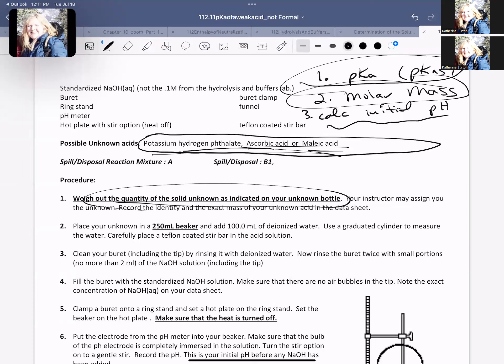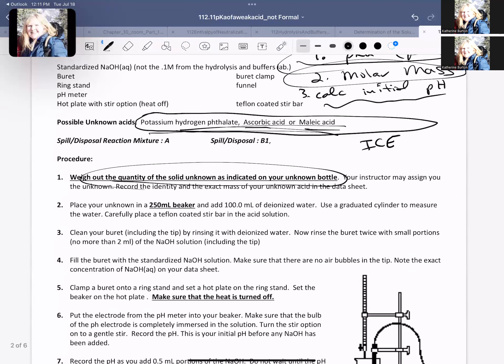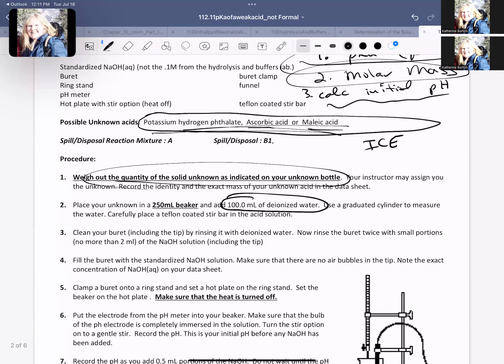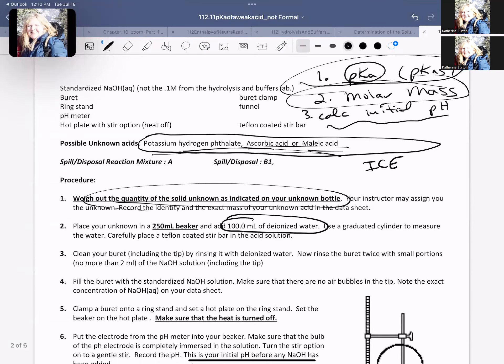Now the last step you're going to do is you're going to calculate the initial pH. This is going to require an ice chart. This is going to require that you remember that you dissolved your acid in 100 mLs of deionized water, and you're going to have to take the pKa you used, get your Ka for that, and then calculate the pH of this acid.